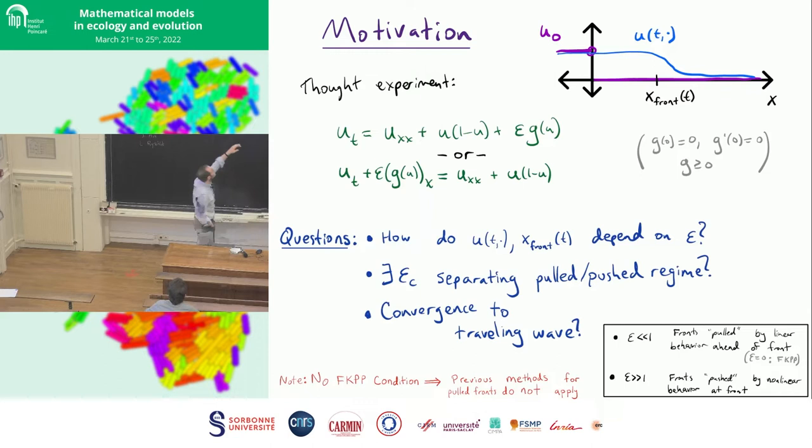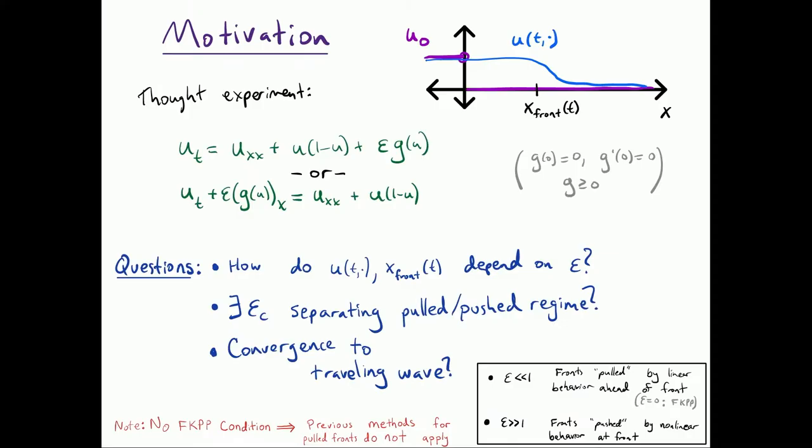So our main questions are, you start from some initial data, like this u-naught, this purple heavy side function. You let time run forward. What happens? You kind of form a traveling wave that's one on one side, essentially zero on the other. There's some transition between them. And so what we care about is understanding where that front is, the transition from one to zero. We also want to say something about the traveling wave, convergence of the traveling wave.